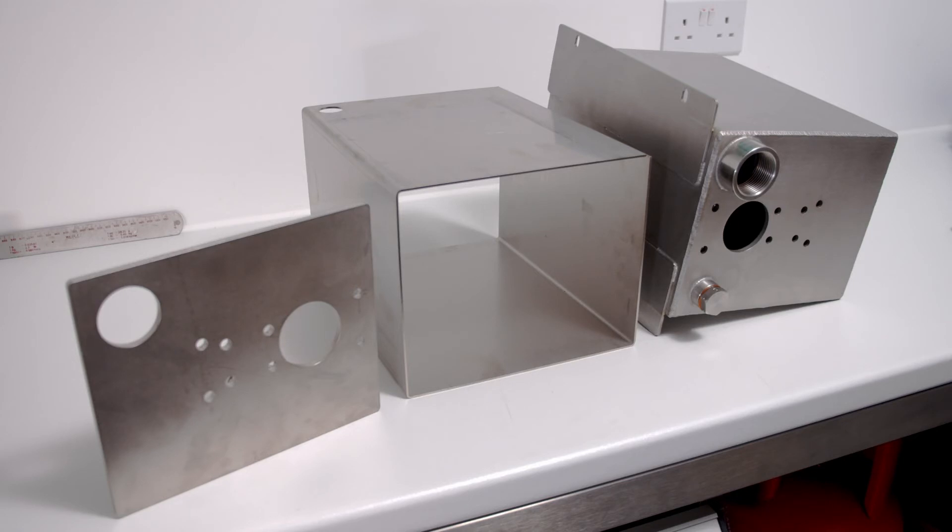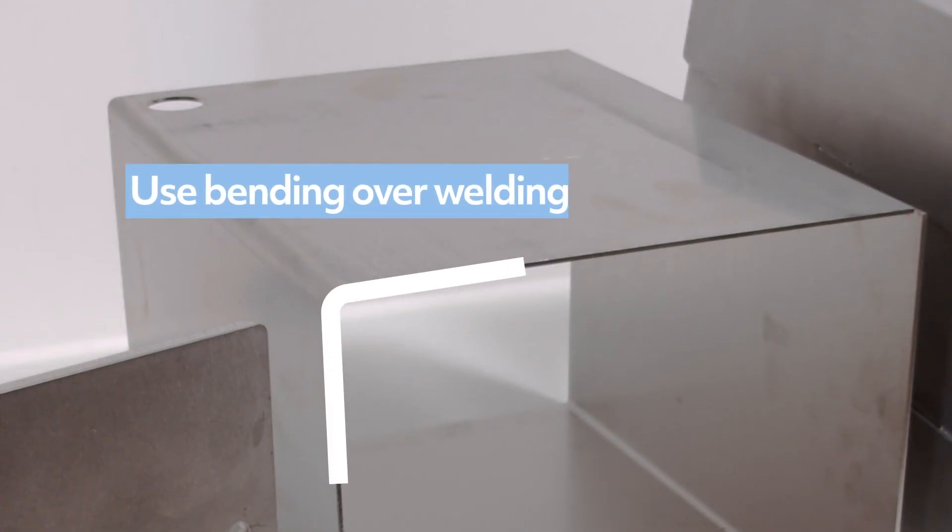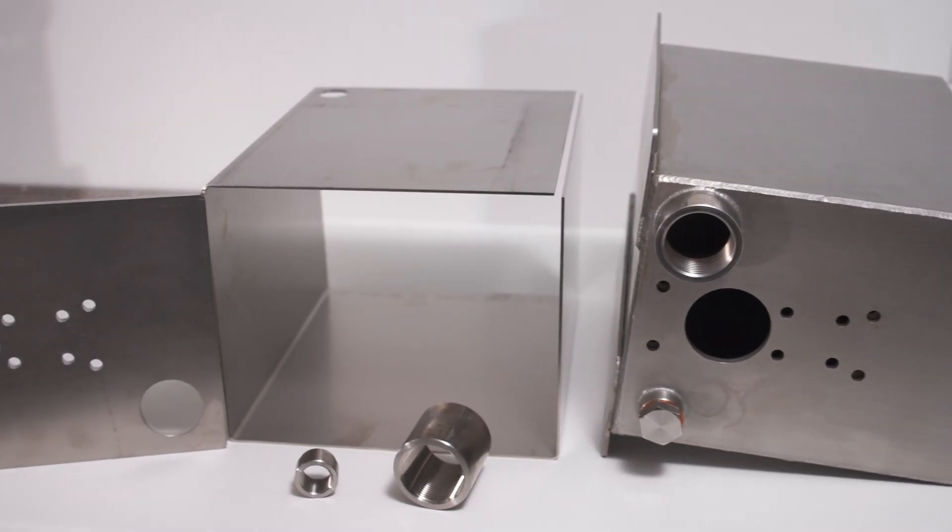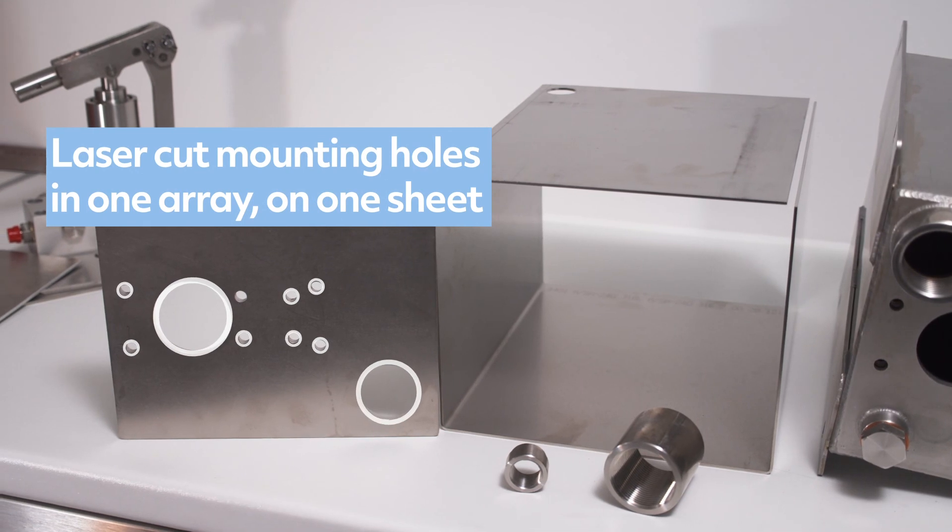On bigger reservoirs, laser cutting and CNC bending are great options for a solid build. Bending is cheaper than welding, so keep welding to a minimum. Especially avoid including small and intricate features that are difficult to weld, and this is very often where leaks happen. Try to laser cut the mounting holes into the sheet metal wraps in one array on one sheet, as this gives amazing accuracy.